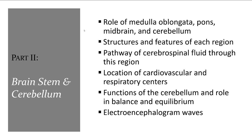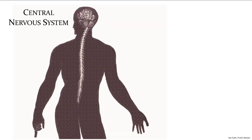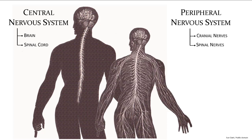Now we're going to work on the parts of the brain, starting from the lowest portion adjacent to the spinal cord and working our way up. The central nervous system consists of the brain and spinal cord. The peripheral nervous system is made up of the motor and sensory nerves that exit and enter the spinal cord, controlling the body or relaying sensory information. Our focus in this chapter is the brain.